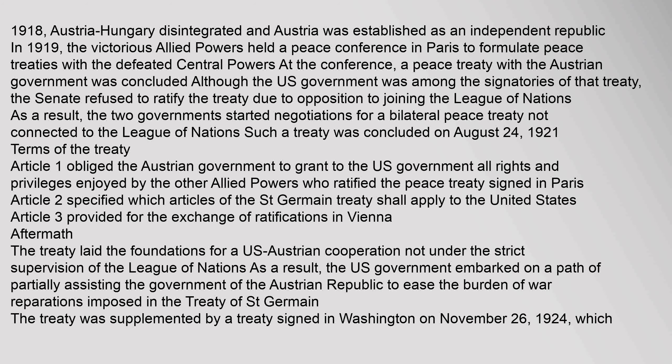In 1919, the victorious Allied Powers held a peace conference in Paris to formulate peace treaties with the defeated Central Powers. At the conference, a peace treaty with the Austrian government was concluded. Although the U.S. government was among the signatories of that treaty, the Senate refused to ratify it due to opposition to joining the League of Nations. As a result, the two governments started negotiations for a bilateral peace treaty not connected to the League of Nations.